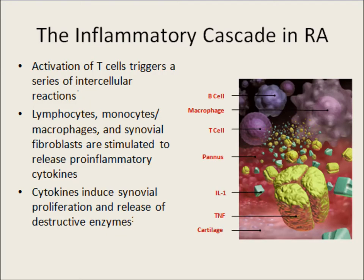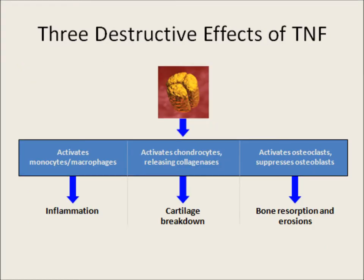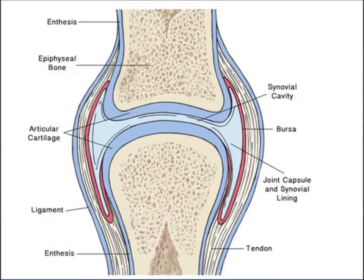There is release of cytokines from macrophages, T-cells, B-cells, and granulocytes. The main cytokine is TNF. TNF is the major pro-inflammatory cytokine; it causes inflammation, activates monocytes and macrophages, causes cartilage breakdown, and is also the cause of bone resorption and erosion.